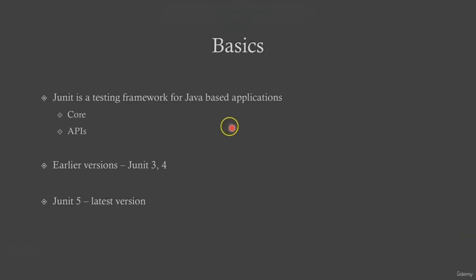JUnit is a testing framework for Java-based applications. The applications can be based only on core Java or they could also be API-based applications. JUnit is probably one of the most widely used frameworks for unit testing. There are earlier versions like JUnit 3 and JUnit 4, which have been widely used in the programming community and in real enterprise projects. JUnit 5 is the latest version of JUnit, and while supporting the earlier versions of Java, it has also adapted Java 8 style of coding using streams, functional interfaces, and Lambda expressions. It has also added new ways of testing like repeated testing, newer ways of conditional testing, and many more. But before we really dig deep into the coding part, let's first understand a bit of its architecture.